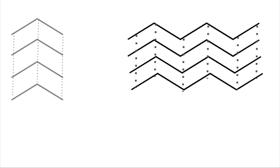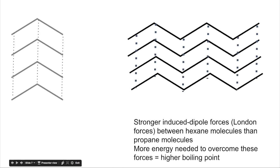On the left we've got four propane molecules with the intermolecular force shown — it's a weak force of attraction between the molecules. Between the four hexane molecules that's a much stronger intermolecular force, so it takes more energy to break it. As an exam answer you could say: stronger induced dipole or London forces between hexane molecules than propane molecules, therefore more energy is needed to overcome these forces, giving it the higher boiling point.